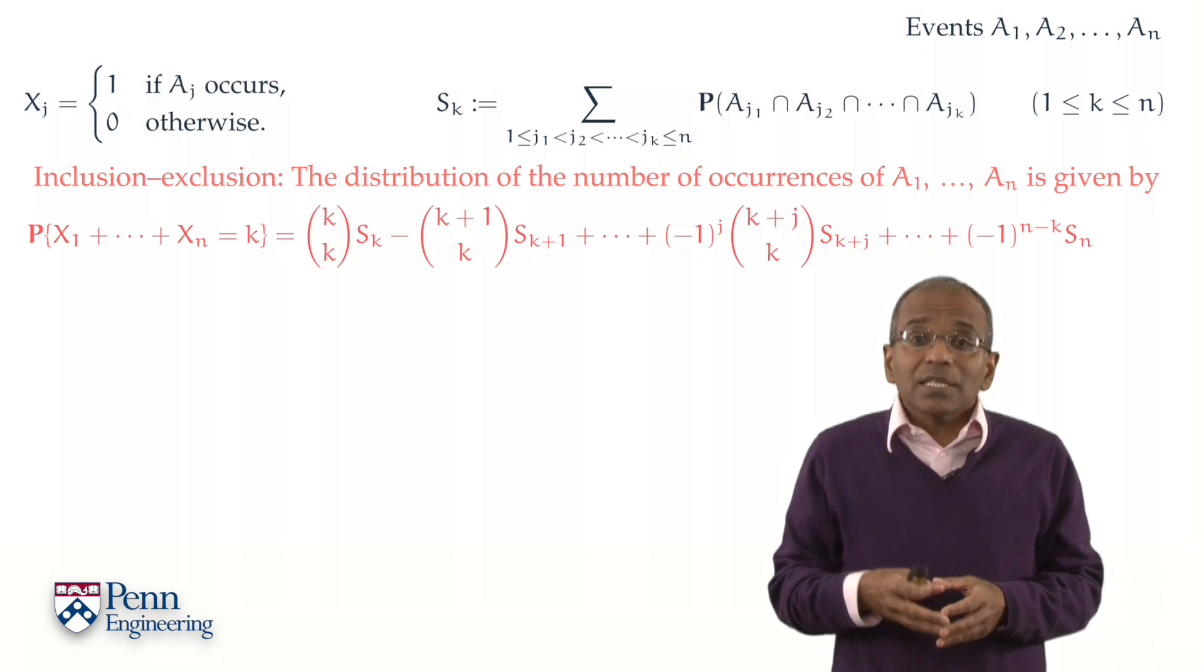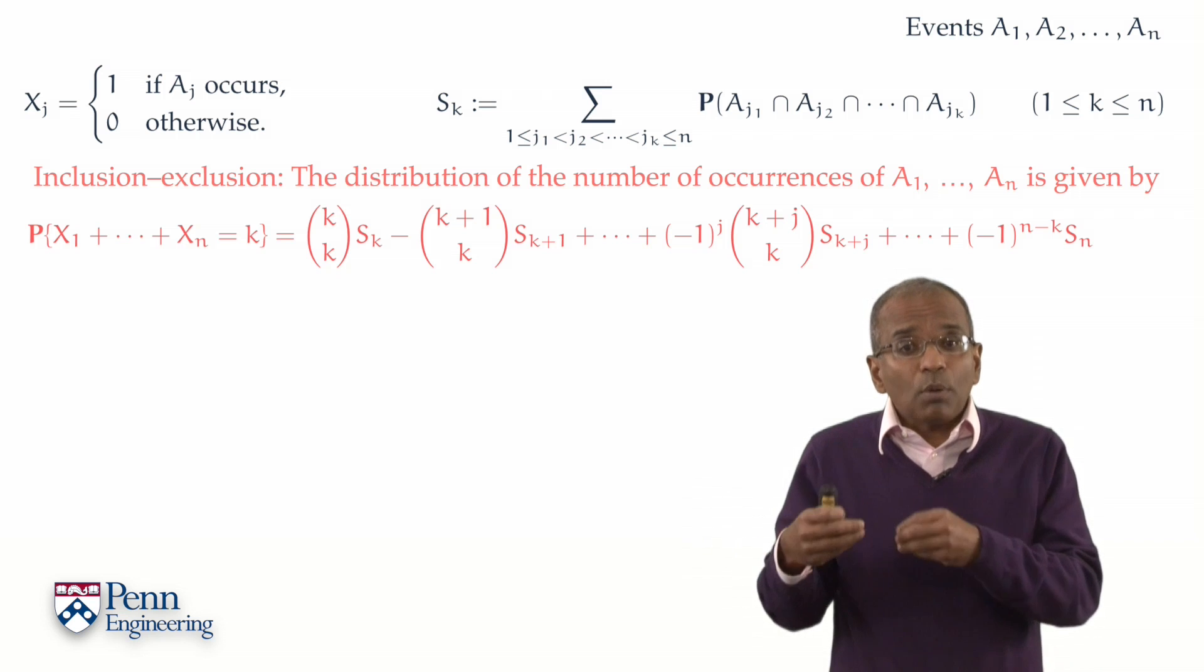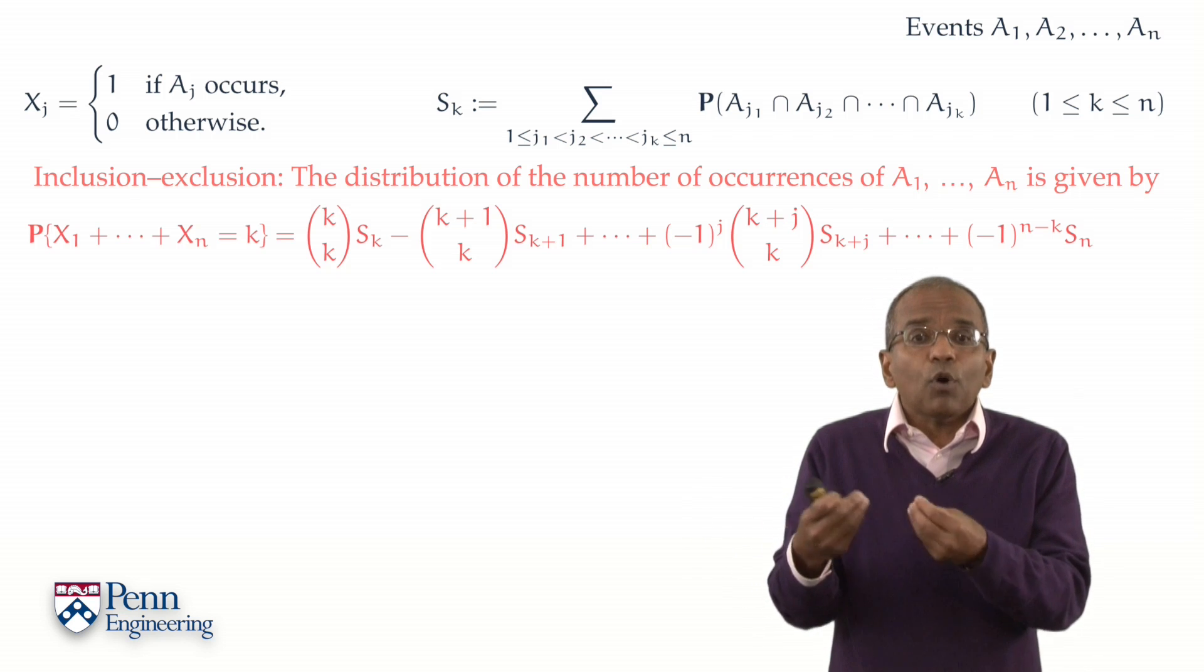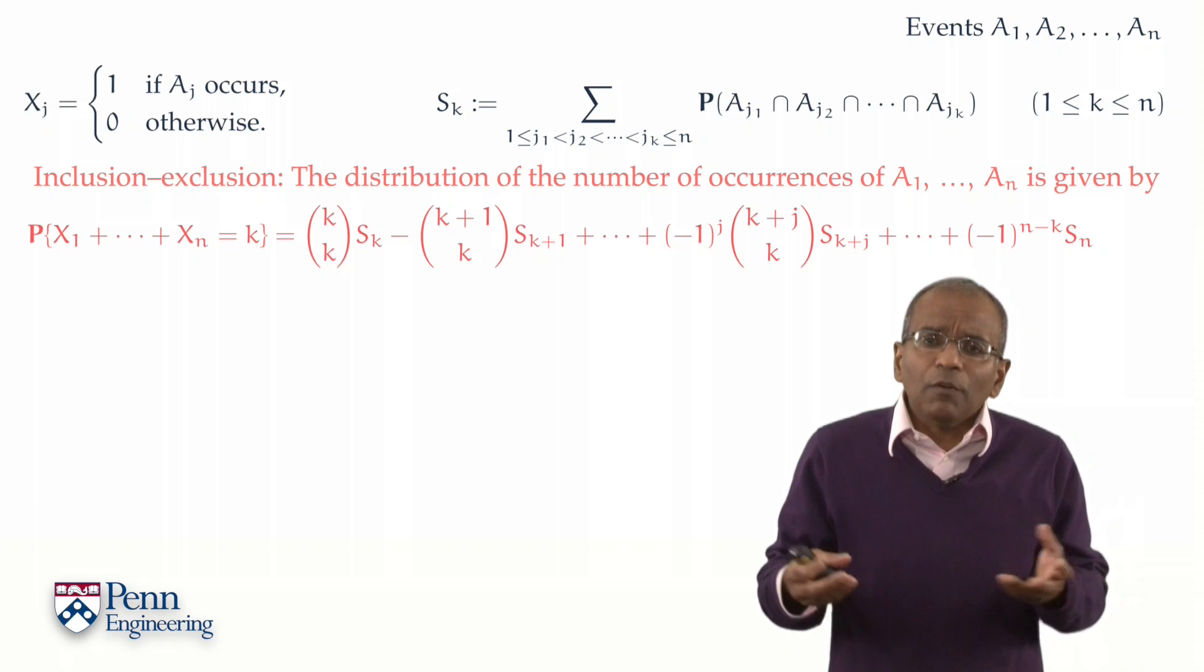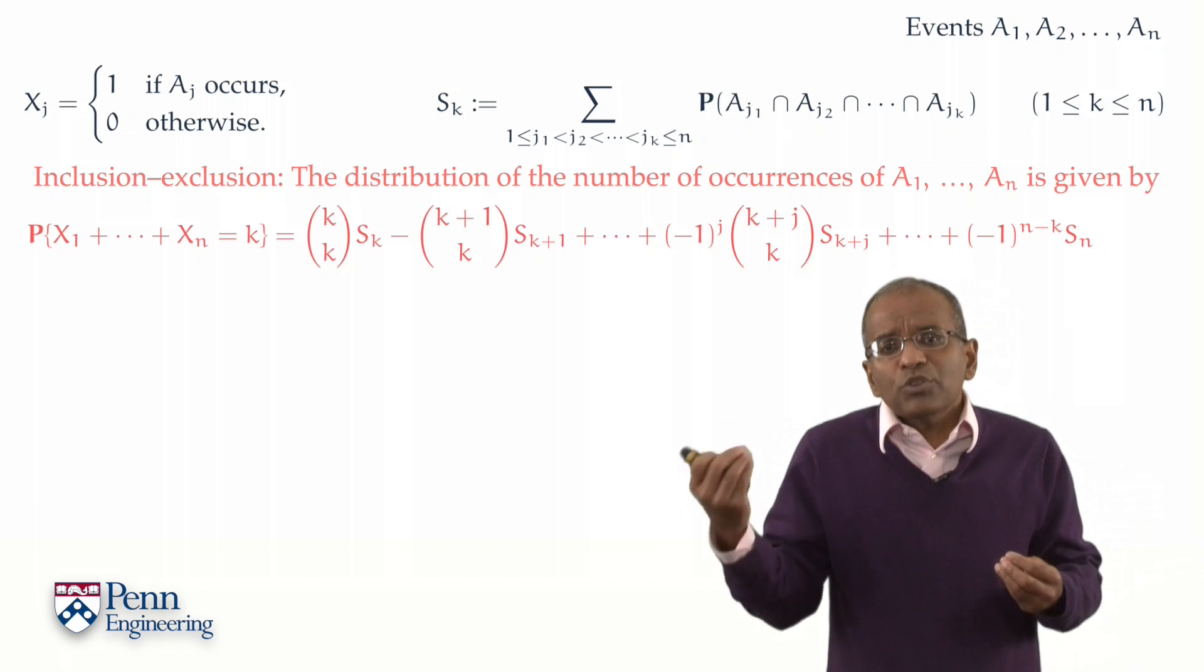So on the left-hand side, what you discover is a probability that the number of occurrences takes some given value, k. k, of course, is arbitrary. It could be a number between 0 and n.